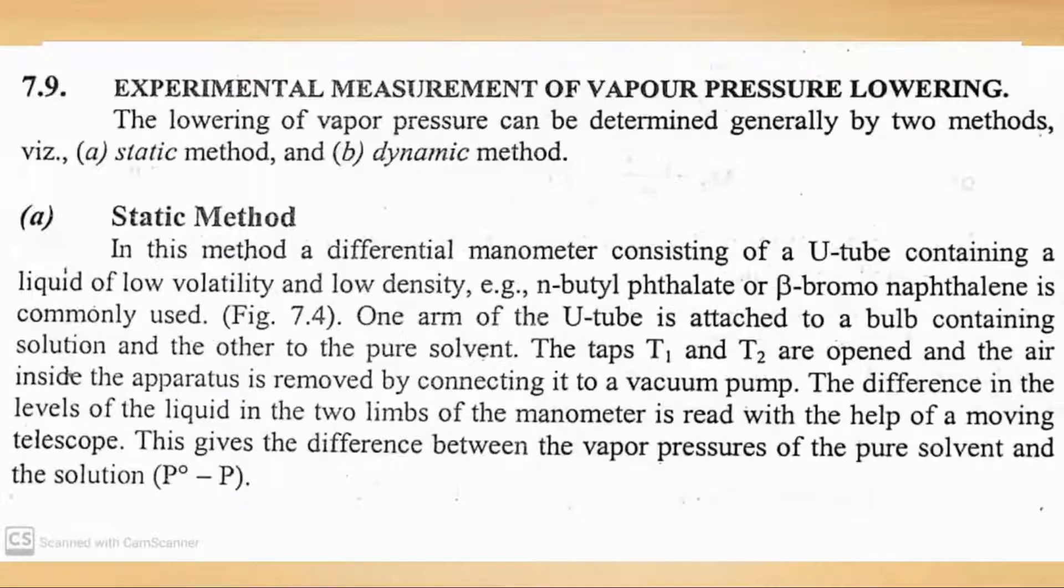Now the measuring method for this - two methods are mentioned here. If you want to note more methods, you can study them from other books. This is a differential manometric method. A U-tube containing a liquid of low volatility and low density, say N-butyl phthalate or beta-bromonaphthalene is commonly used.